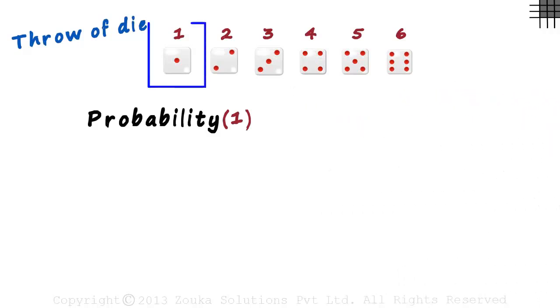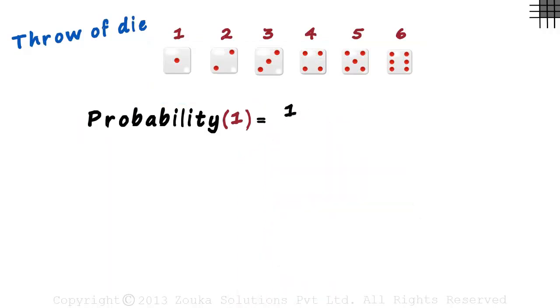There is only one way in which we can get a 1. That is, if the dice lands a 1. And in all, there are six possible outcomes. It means that the probability of getting a 1 at one throw of a dice is 1 by 6.